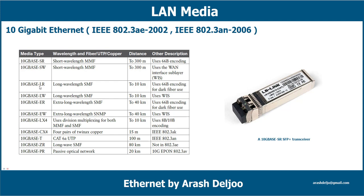10GBase-LR and 10GBase-LW use long wavelength (~1300–1310 nm) over single-mode fiber (8–9 micron diameter), with distances up to 10 kilometers and beyond. LR is for LAN use with 64B/66B encoding for dark fiber; LW is for WAN use and uses WIS.